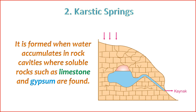2. Karst Topography — karst landscapes are characterized by unique surface and subsurface features, including sinkholes, caves, and underground drainage systems. The dissolution of soluble rocks creates a network of conduits through which water can flow. 3. Recharge — karstic springs often emerge in recharge areas where water from precipitation enters the karst system, percolates through the soluble rocks, and travels through underground conduits.